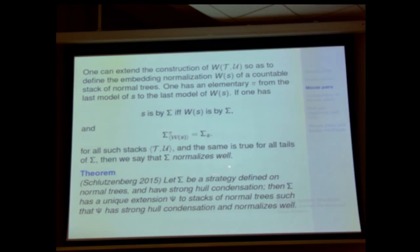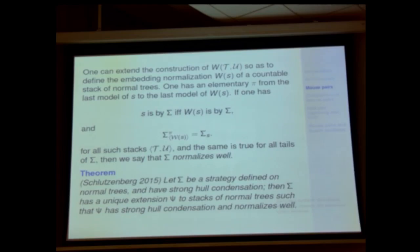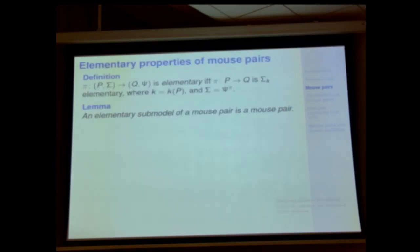You need normalizing well not just for sigma but for all of its tails too. Schlutzenberg proved that strong hull condensation for a strategy implies it can be extended to a strategy on stacks which normalizes well and has strong hull condensation. That's not so useful for the constructions I'm talking about later because we really want push-forward consistency as well, and Schlutzenberg's method doesn't get that. But you can get these properties by other means. So a mouse pair is a countable transitive P with an iteration strategy with strong hull condensation, normalizes well, and push-forward consistency.